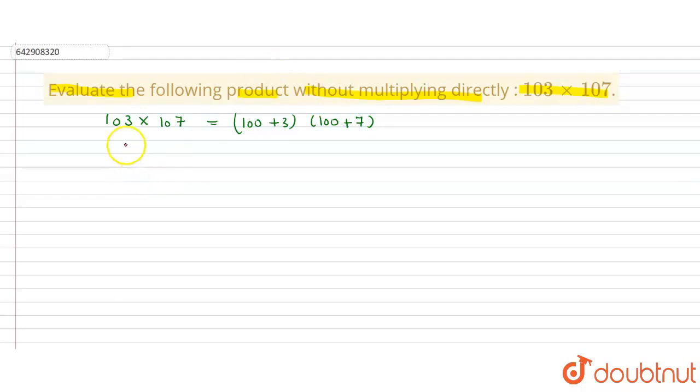And we will tell you a formula: (x+a)(x+b) equals x² plus (a+b)x plus ab.